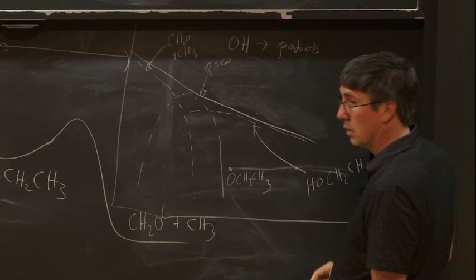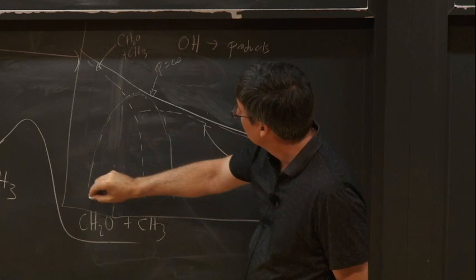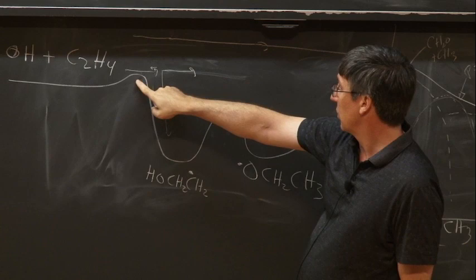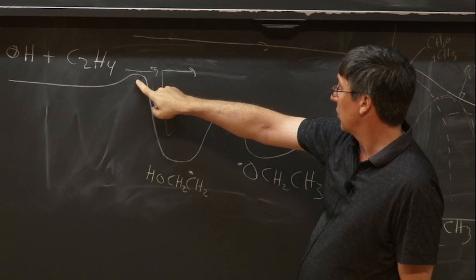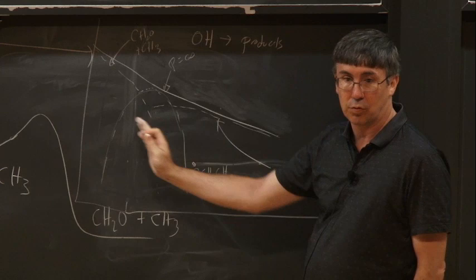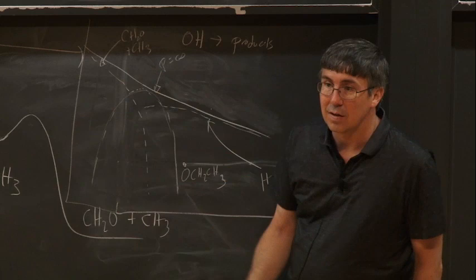You get these really wild non-monotonic Arrhenius plots for the individual product channels of OH plus C2H4, even though the total rate is actually very sensible — a regular Arrhenius behavior just coming over the initial barrier. What happens after crossing that barrier depends wildly on temperature and pressure. As you change pressure, the temperature where a given channel hits its maximum will shift around, so the shapes change qualitatively.